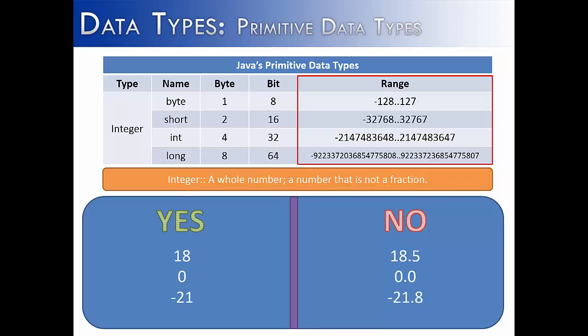And as we were just discussing, the difference between an integer and a real number is that integers do not have decimals. So we see valid numbers over here and invalid integers over here.